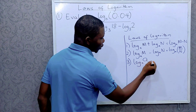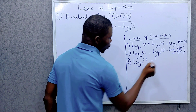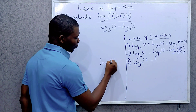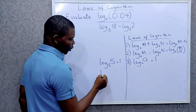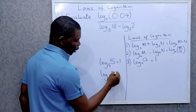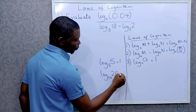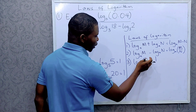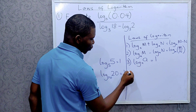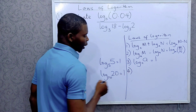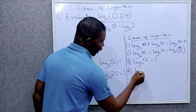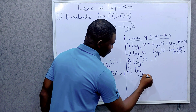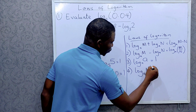The third law: when you have a logarithm where the base and the argument are the same — log base a of a — this is equal to 1. For example, log base 5 of 5 is equal to 1, and log base 20 of 20 is equal to 1. When the base and the argument are the same, that logarithm equals 1.